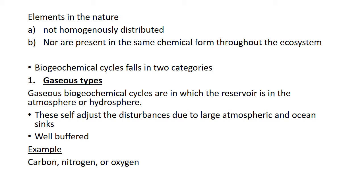In the gaseous type, local increases in carbon dioxide production by oxidation or combustion tend to be quickly dissipated by air movement, and increased output is compensated for by increased plant uptake and carbonate formation in the sea. Gaseous type cycles with large atmospheric reservoirs are considered to be well buffered globally because of their large capacity to adjust to change. However, there are definite limits to the self-adjustment capacity of even a large reservoir such as the atmosphere. Examples are carbon, nitrogen and oxygen.